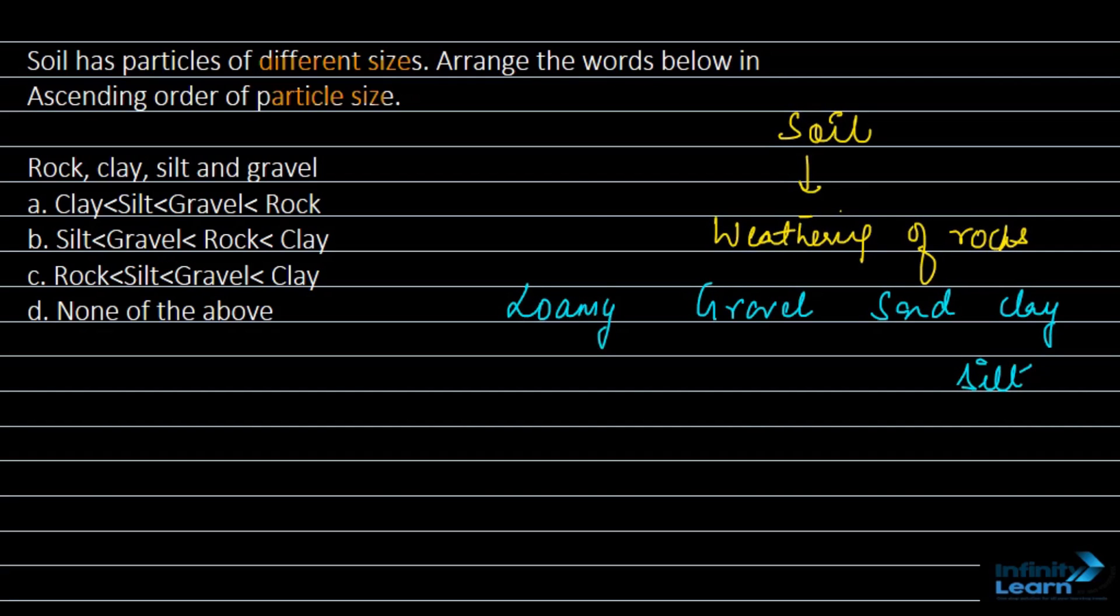The particles of sand—it is second most biggest. Gravel is quite big out of them. Then we have sand on second number. And after that, we have the particle that is silt and then we have clay.